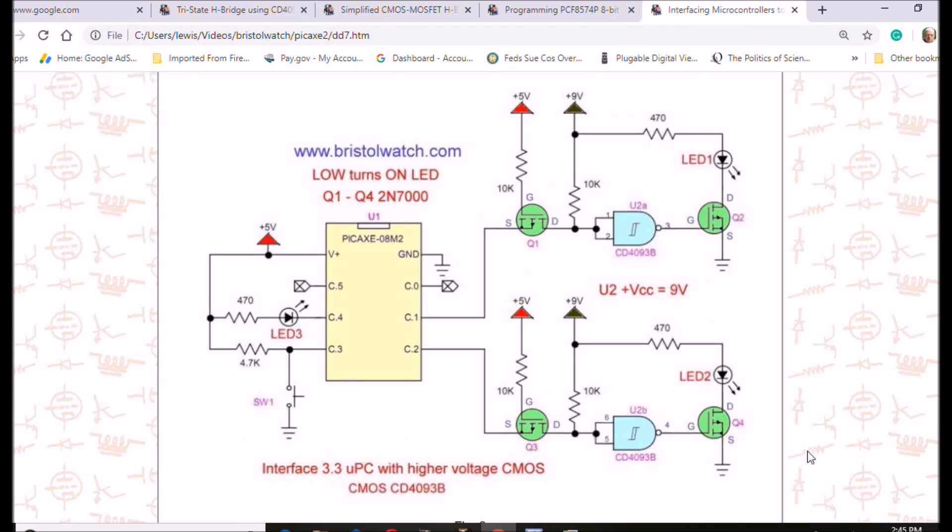This is a variation of the previous circuit, except for the CMOS, I'm using a CD4093B. It is a two input NAND gate with also a built-in Schmidt trigger for clean switching and so forth.